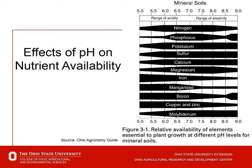Iron would be another consideration. As we go to the west where we have some high pH soils, perhaps up in the 8 range, they often may have some iron shortages in plants, whereas we do not typically see that here in Ohio. But again, pH helps keep us in a range for good nutrient availability.